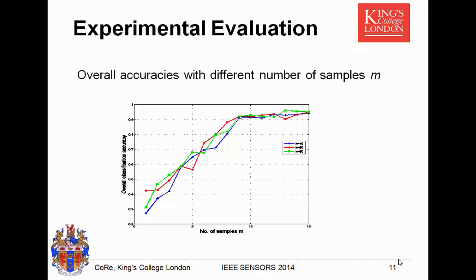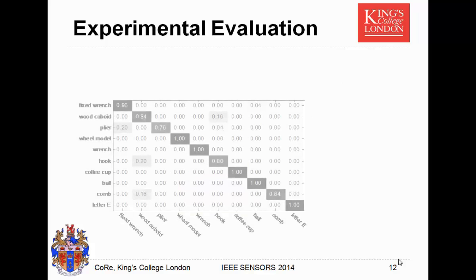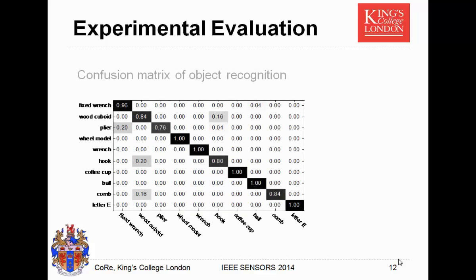Our final result uses a dictionary size of 15 and 10 samples. We achieve an average accuracy of 91.2 percent, showing that we can recognize these objects successfully.